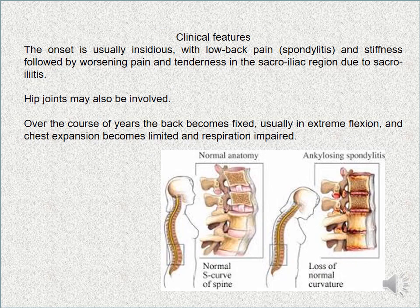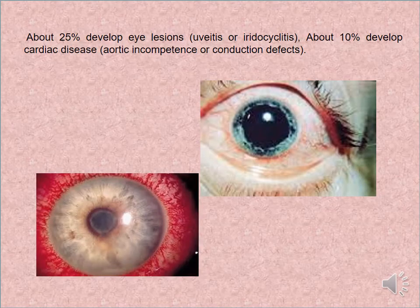The clinical features: onset is usually with low back pain, stiffness, and spondylitis, followed by worsening pain and tenderness in the sacroiliac region due to sacroiliitis. The hip joint may also be involved. Over the course of years the back becomes fixed, usually in extreme flexion, and chest expansion becomes limited with respiration impaired.